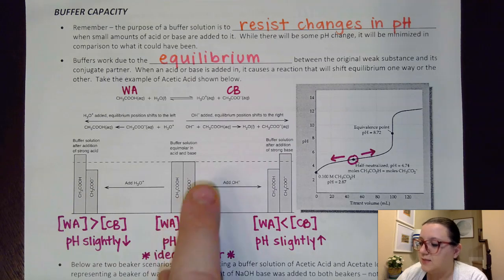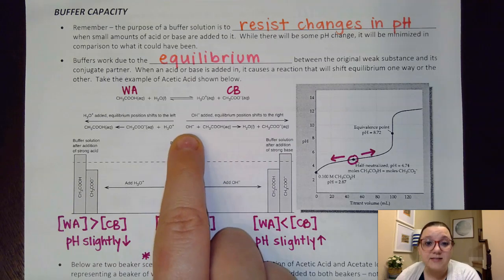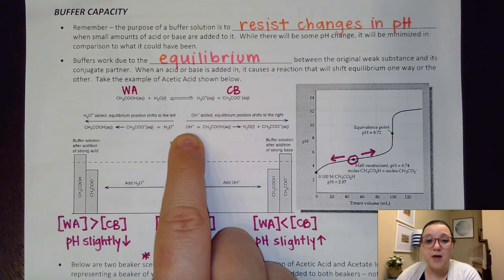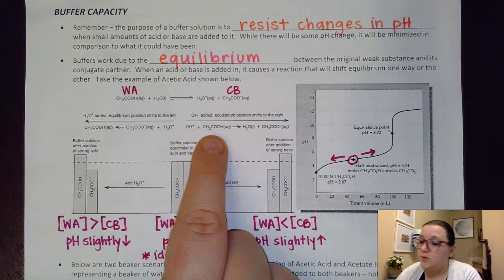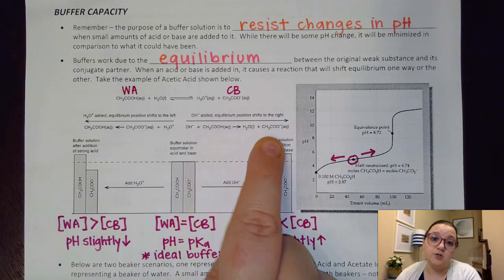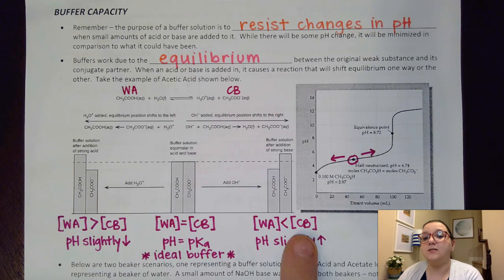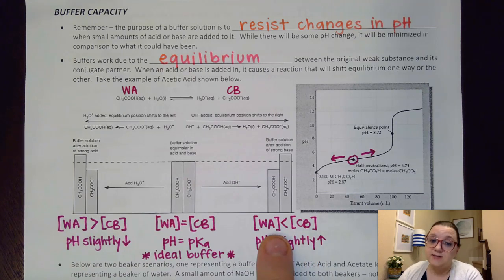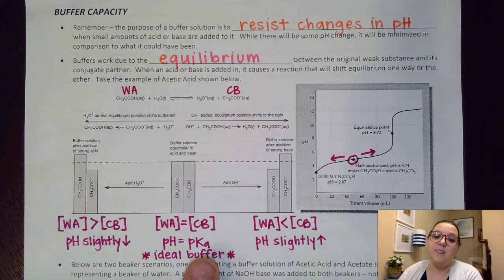On the flip side, if I react with a base, hydroxide would end up reacting with the acid, shifting equilibrium more towards the conjugate base side. That causes the conjugate base to be in a slightly higher concentration than the weak acid, so the pH gets slightly higher than that pKa value.